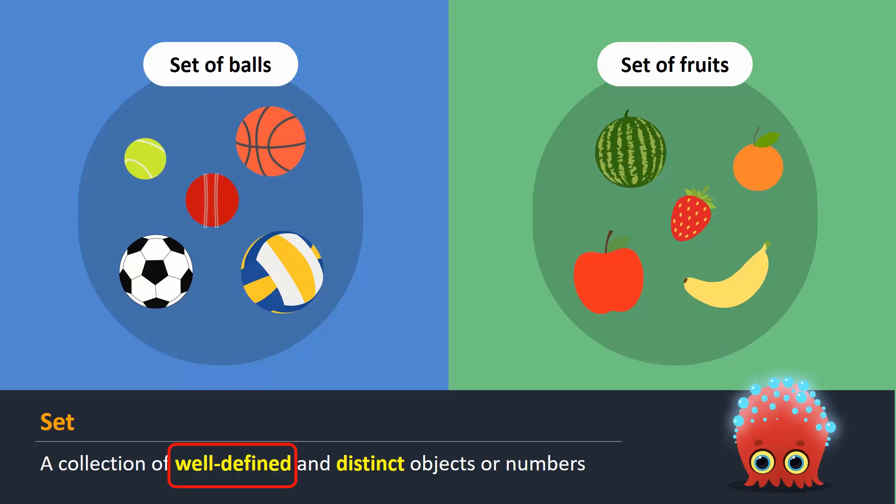Because of these well-defined properties, we know that the basketball does not belong to the set of fruits. Similarly, the apple cannot go into the set of balls. The second keyword is distinct. This means that every object is unique and no two objects are identical. For example, in the set of balls we cannot have two identical basketballs.